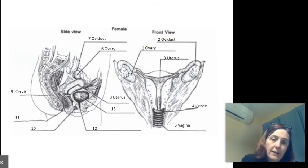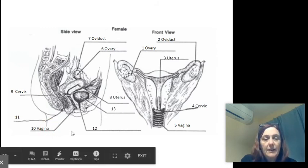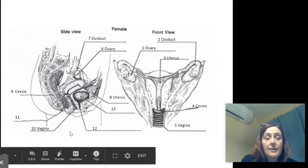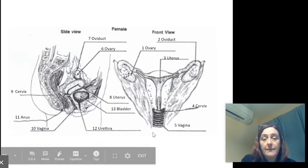The baby will pass out of there and through the vagina. Sometimes they call that the birth canal. Back here we have the anus, and in the front we've got the urethra and the bladder that holds the urine.